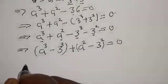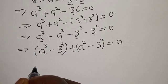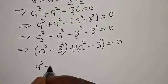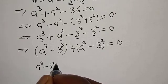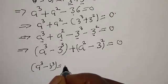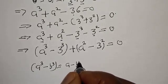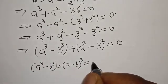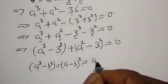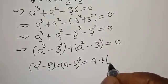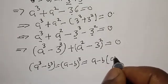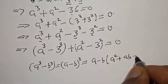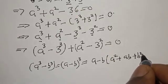We know that A raised to power 3 minus B raised to power 3 is the same as A minus B, multiplied by A square plus AB plus B square.